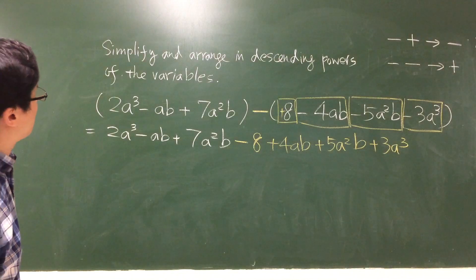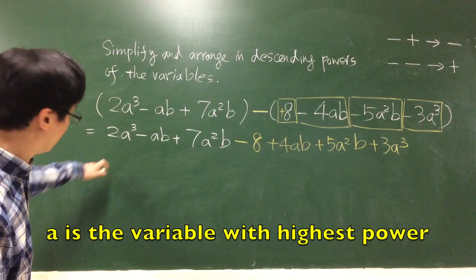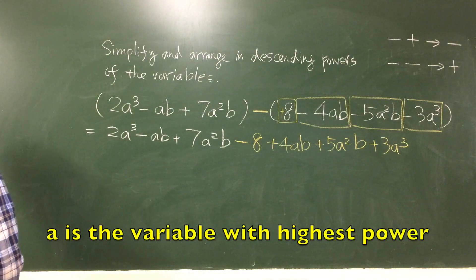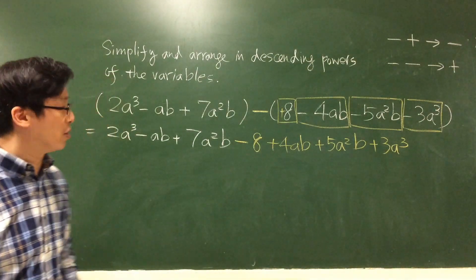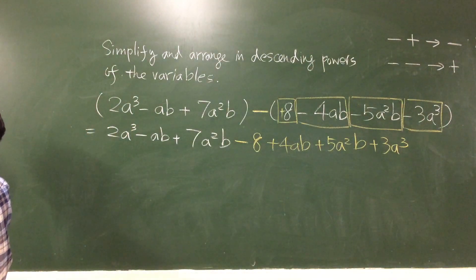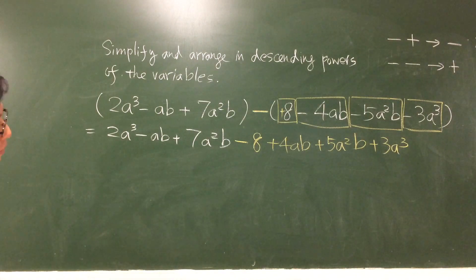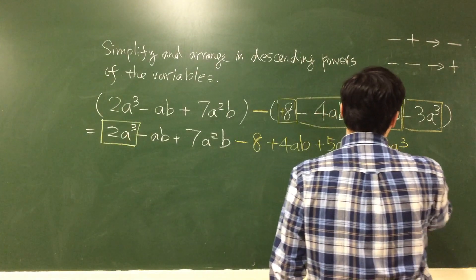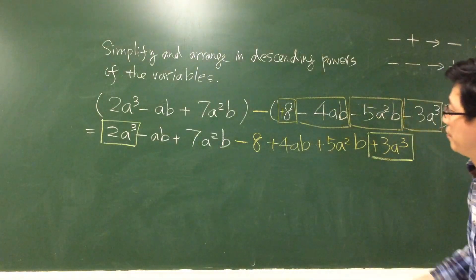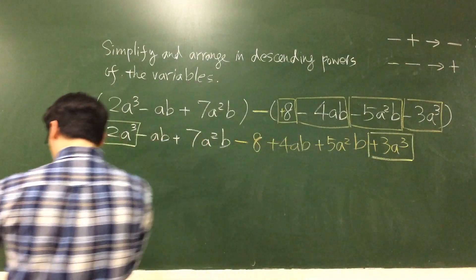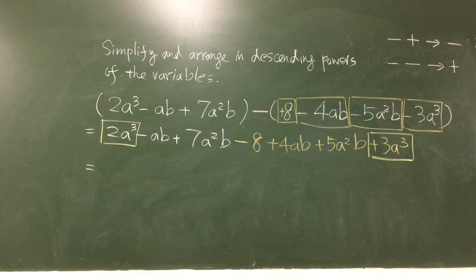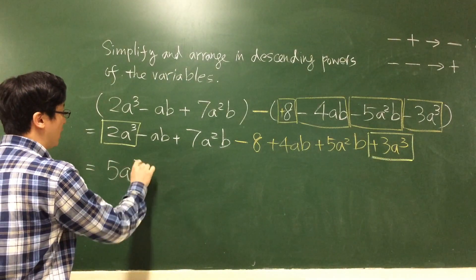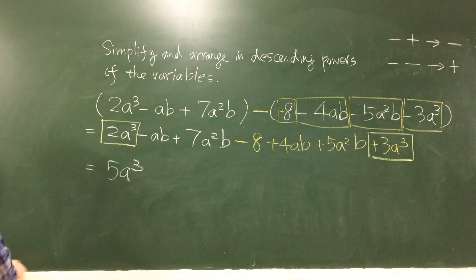And with the arrangement, the powers of A — we choose A. Because we can see that the highest power is 3, and we also have some constant term. We just focus on A terms. So this one: 2a cubed plus 3a cubed. We can do the simplification in our mind — 2a cubed plus 3a cubed gives 5a cubed. And then the next one will be a squared.